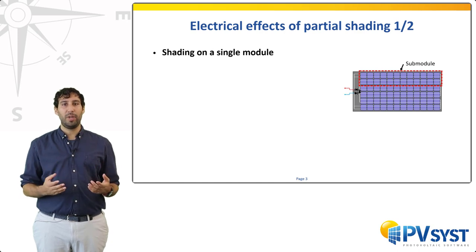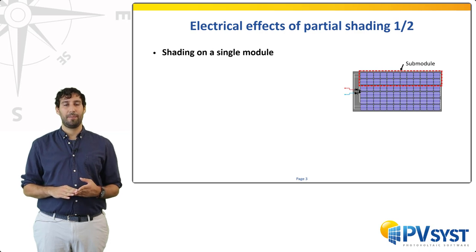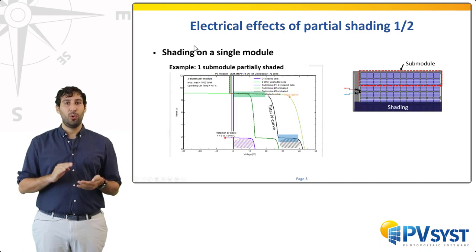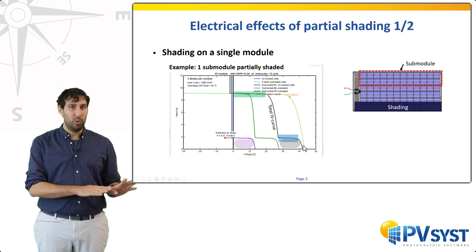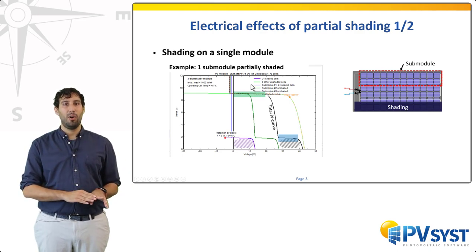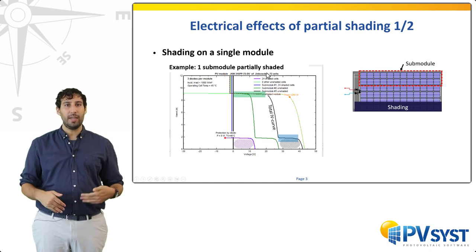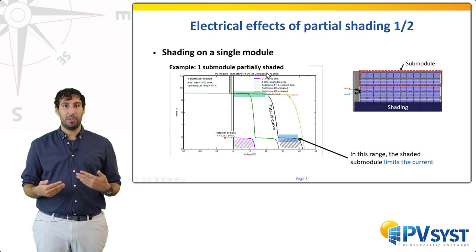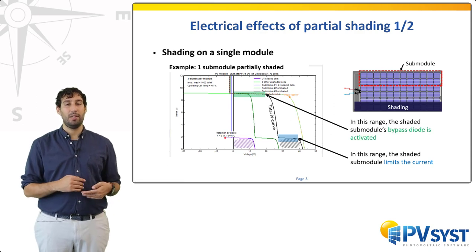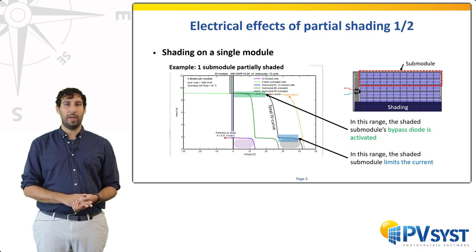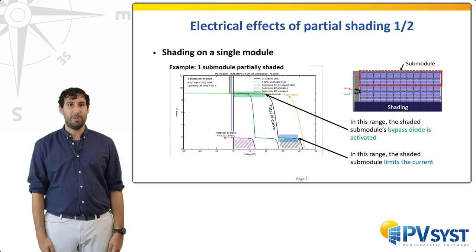When the submodules forming the module are put together, you obtain the total IV curve in black. Here we have shaded one submodule among the three. There are two operating regimes, shown in blue and green: either in blue at a current limited by the shaded cells, or in green at a lower voltage because the bypass diode is activated. In the second regime, the power from the diffuse irradiance shining on the shaded submodules is lost. This roughly corresponds to the dashed area. This is the first type of mismatch loss.